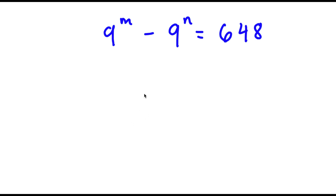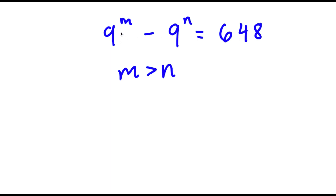In this problem, I have 9 to the power of m minus 9 to the power of n is equal to 648. Based on first glance, we can tell that m is greater than n because the result is a positive number and the bases are the same. So 9 to the power of m minus 9 to the power of n is a positive number, meaning 9 to the power of m is greater than 9 to the power of n, and m is greater than n.